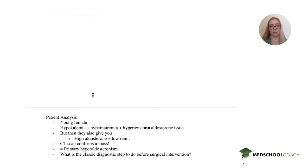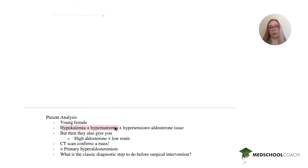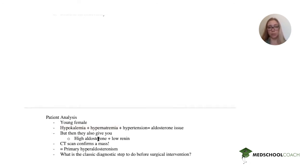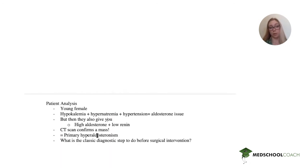This patient is a young female with symptoms of hypokalemia, hypernatremia, and hypertension — automatically pointing to an aldosterone issue. They confirm it with high aldosterone, low renin, and a CT scan showing a mass. So this question did a lot of the thinking for you. You know she probably has primary hyperaldosteronism. Now, what is the classic diagnostic step to do before surgical intervention? It's a board favorite.